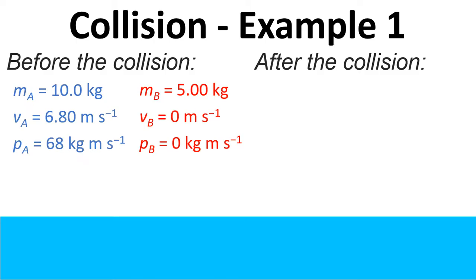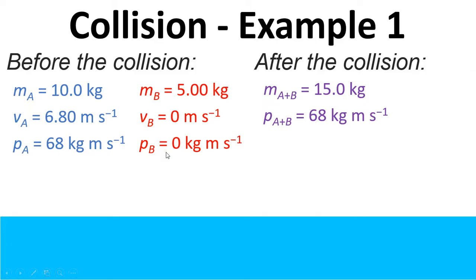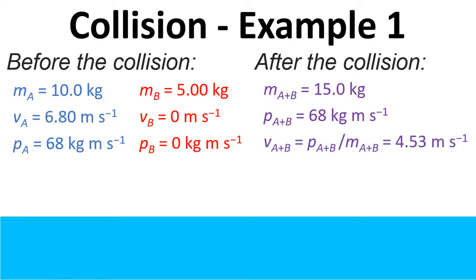After the collision the two blocks have stuck together and have a combined mass of 15 kilograms. They also have a combined momentum of 68 kilogram meters per second, because the momentum before the collision is 68 plus 0, and since momentum is conserved it must also be 68 kilogram meters per second after the collision. Rearranging the momentum equation, velocity equals momentum divided by mass, so 68 divided by 15 gives 4.53 meters per second.